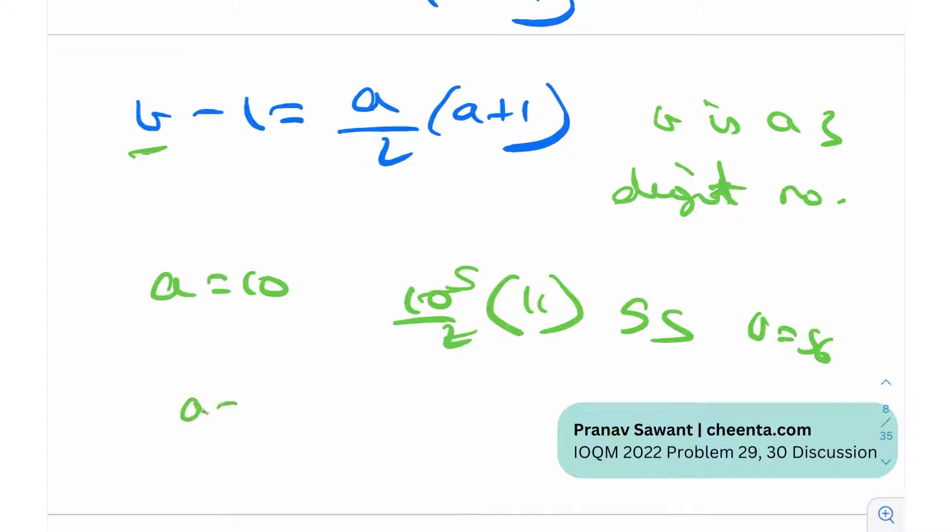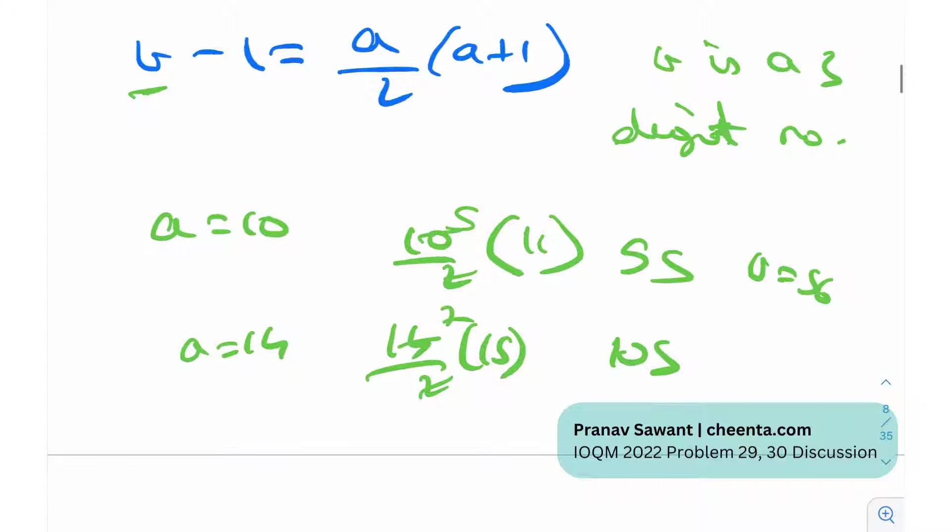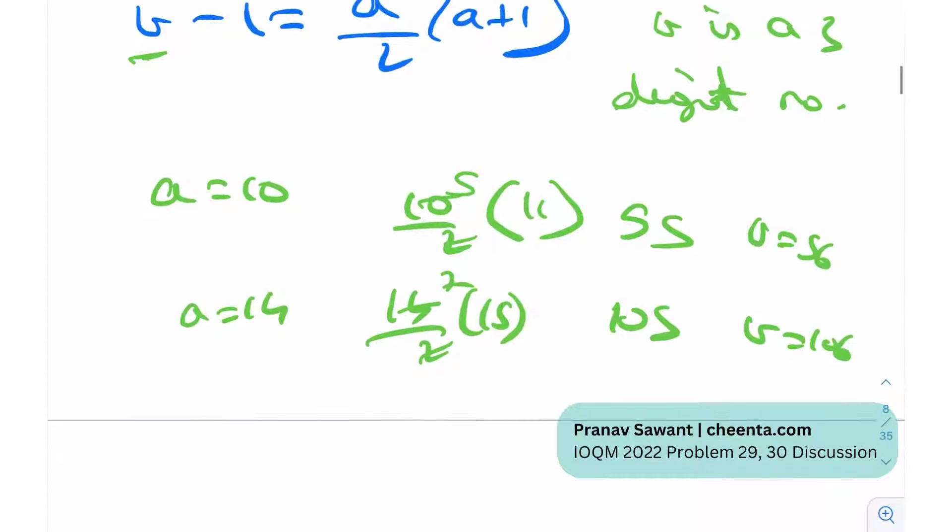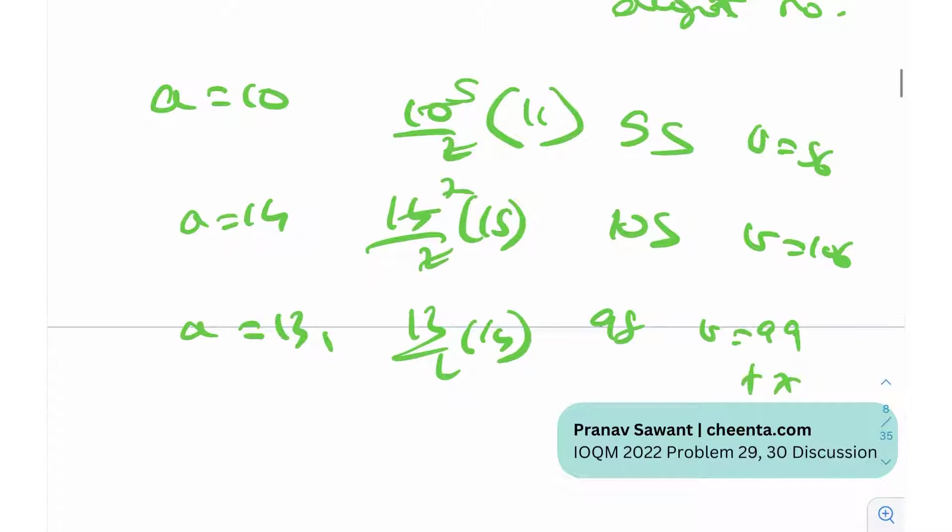If I take A is equal to 13, I will get 13/2 times 14 which is 98, so b will be 99. So again this does not hold true. So A is equal to 14 is actually the minimum value of A for which b is a three digit number. In fact, b here comes out to be 106, so we can just write this b minimum as well.